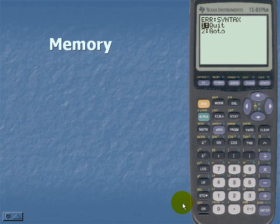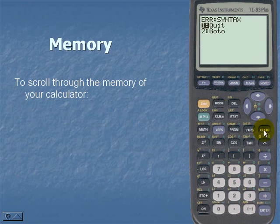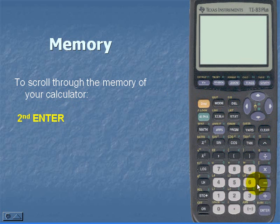Next let's look at the memory on the calculator. To scroll through the memory of your calculator, simply hit second and enter. That'll take us up one level. Second and enter again takes us up a second, a third, a fourth, a fifth and so on.